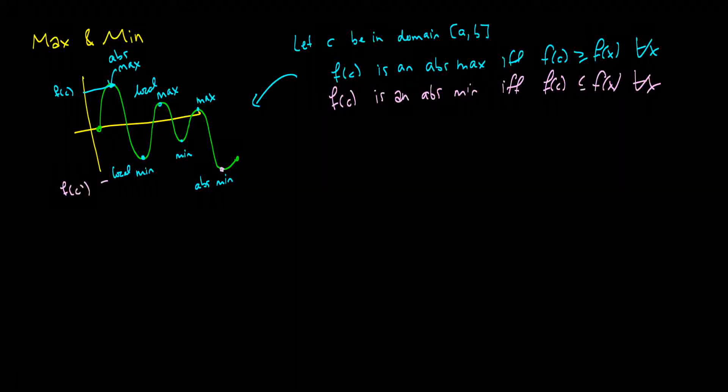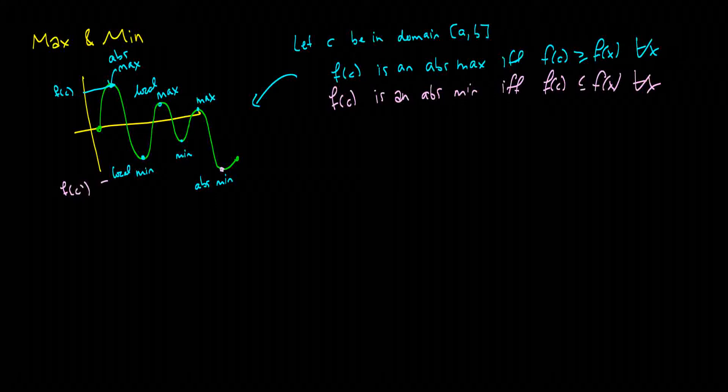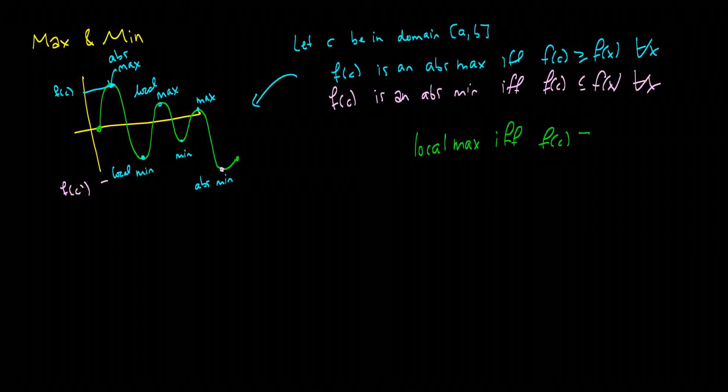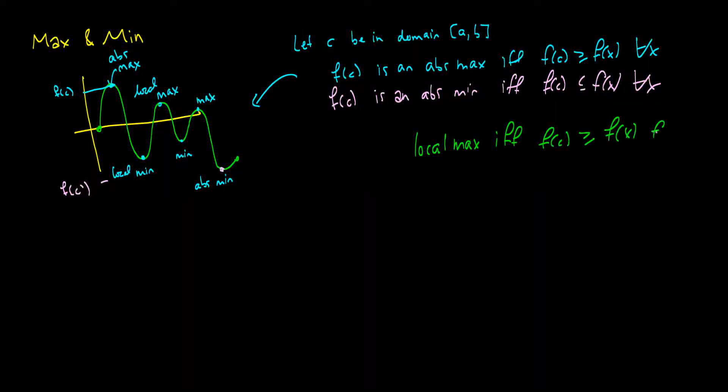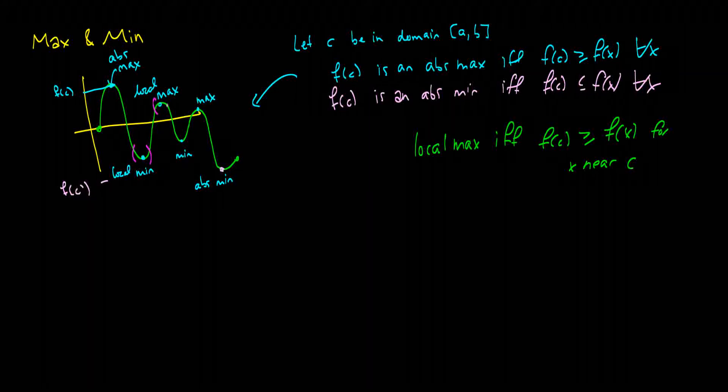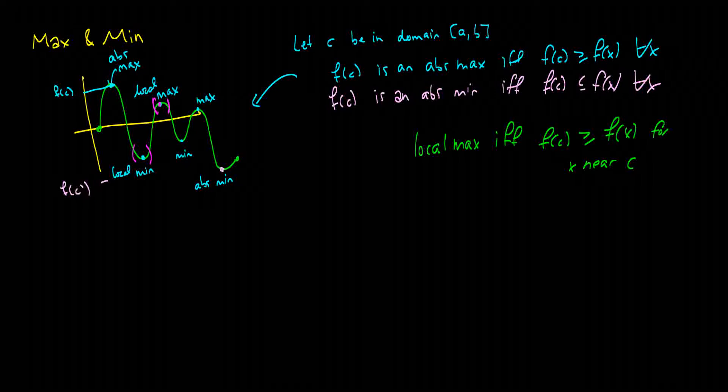Now when we have a local max or a local minimum, it's almost the same definition. But we have a local max if F of C is greater than or equal to F of X for X near C. So this is saying, okay, let's isolate this area a little bit. So let's call it like this area right here. Everything in here is near C. It's a small enough distance. And this point here is greater than all of the other points in that little interval. So that's a local max.